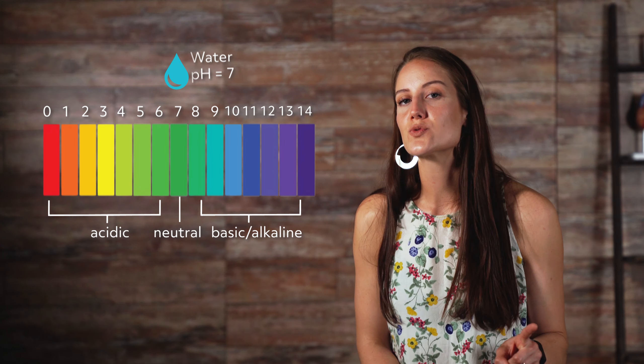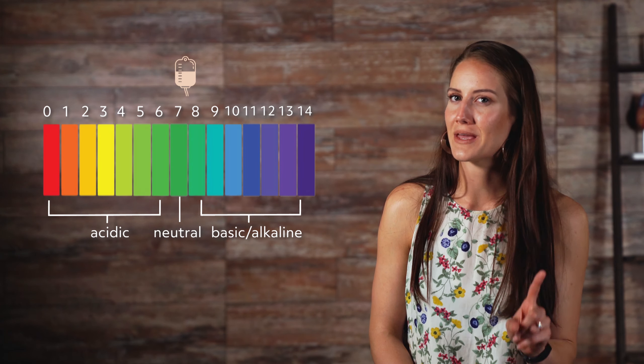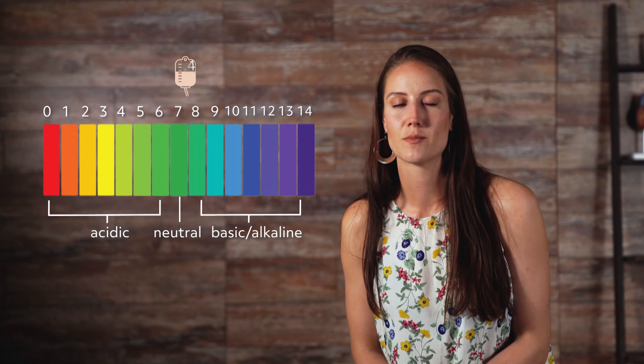Pure water is neutral, with a pH of 7. Blood is slightly basic, with a pH value of 7.4.